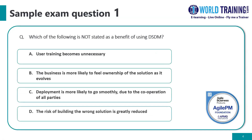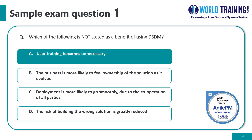Which of the following is not stated as a benefit of using DSDM? The correct answer is A: user training becomes unnecessary. That is definitely not a stated benefit. Whereas B, C, and D are basically benefits of using DSDM — greater ownership of the solution by the business, deployment running smoothly, and collaboration and cooperation across multiple entities. You significantly reduce the risk of building a wrong solution because during the feasibility and foundation phase, you would assess the business case and the risk exposure of the project.